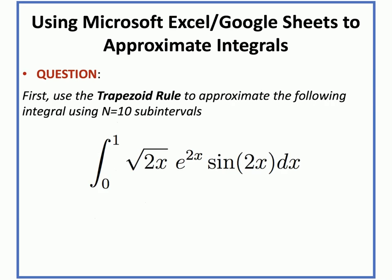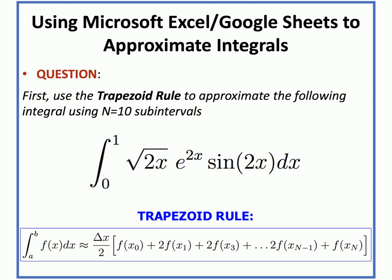First, we'll use the trapezoid rule to approximate that integral. Recall that the trapezoid rule takes the following form: the integral approximation equals delta x divided by 2, times the sum including the function values at the left and right ends of the domain, and 2 times the function values at all the interior points.